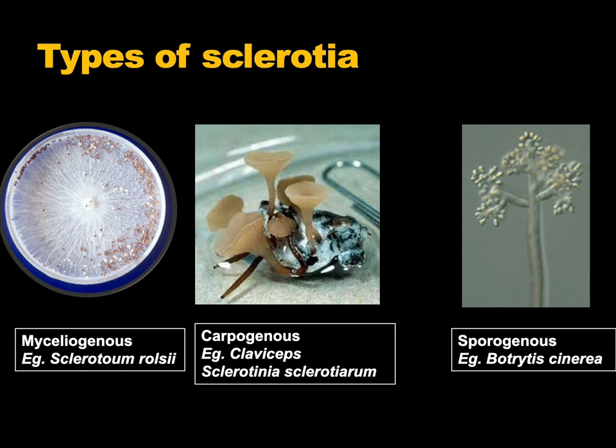Organisms that produce sclerotia are classified based on their nature of germination. They are classified as myceliogenic — applicable for the organism Sclerotium rolfsii — carpogenic — applicable for organisms like Claviceps purpurea or Claviceps species and Sclerotinia sclerotiorum — and sporogenic — which is true for the organism Botrytis.